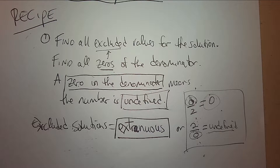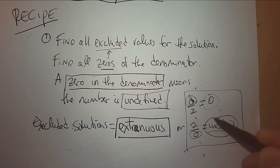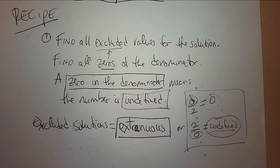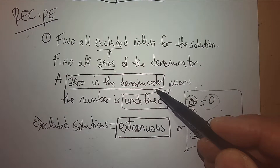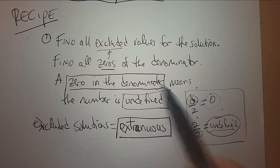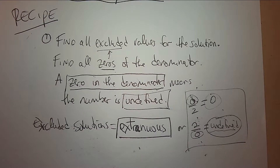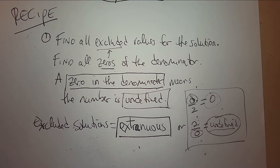What does the word extraneous mean? It means those are solutions that are excluded. Why are they excluded? Because the answer would be undefined — when we have a zero in the denominator. So the first step is: when we look at an equation, we find the zeros of the denominator, and we know they are excluded. What do we call that word? Extraneous. Is that a new word for today? It's the word of the day — like Sesame Street.